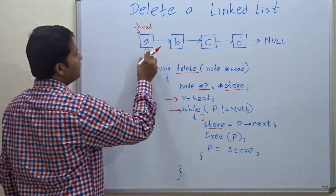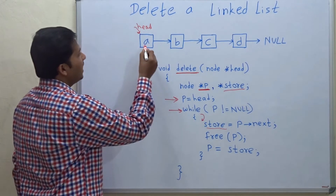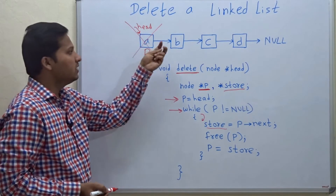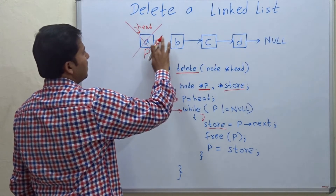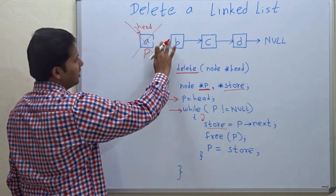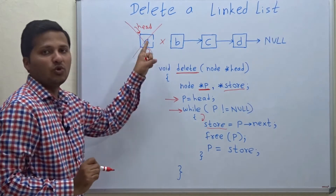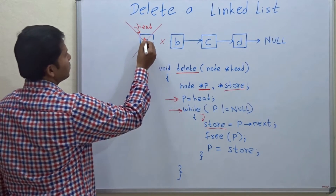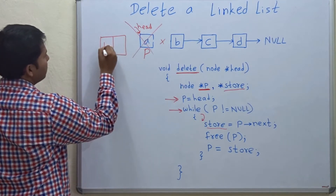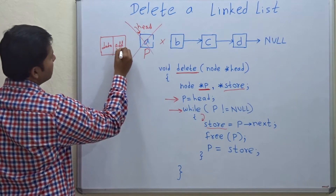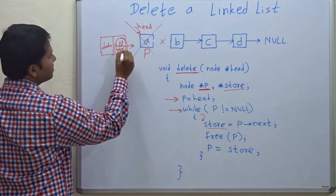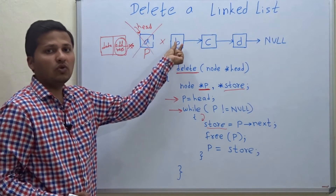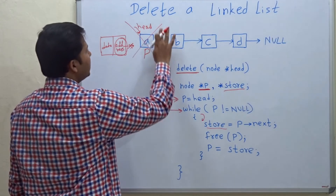We are going to delete every node when we reach it, and currently we are at the head node. But if we delete this node, we will lose all the further addresses — this link will also be deleted along with the node, because inside this node the address of the next node is stored. So if we delete this node, the address of the next node is also lost. That is why before we delete this node, we have to store the address of the next node.